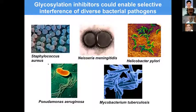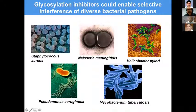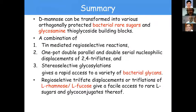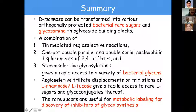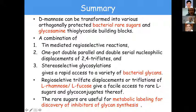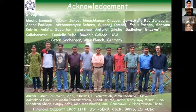We now want to expand our horizon to test gram-positive bacteria and remaining gram-negative bacteria, and this work is under progress. In summary, in 25 minutes I hope I was able to show that you can start with a simple sugar like D-mannose, convert it by simple SN2 reactions into bacterial rare sugars, make longer glycans and check their efficacy for vaccine development, and then use the monosaccharides for metabolic labeling and glycan inhibition.